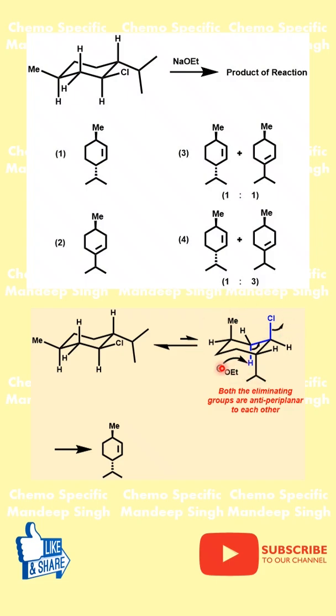As soon as this particular conformer forms, the ethoxide attacks the hydrogen, this bond comes here, and the chloro leaves. So the only compound that can form is this particular compound, which in our case is option number A.